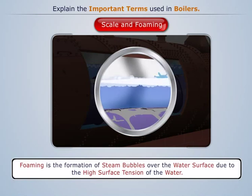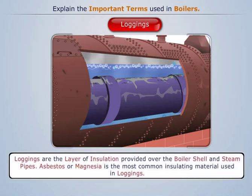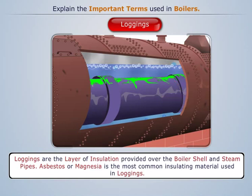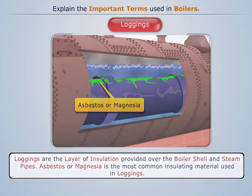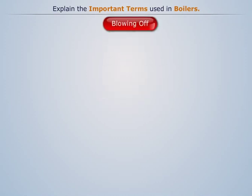Foaming: it is the formation of steam bubbles over the water surface due to the high surface tension of water. Lagging: these are the layers of insulation provided over the boiler shell and steam pipes. Asbestos or magnesia is the most common insulating material used in lagging.